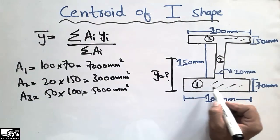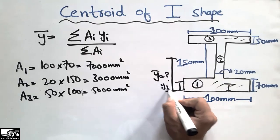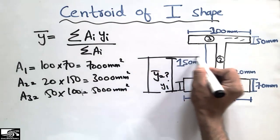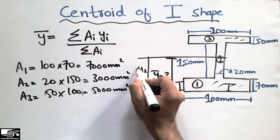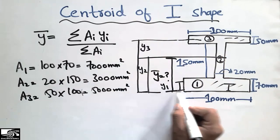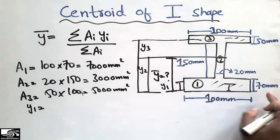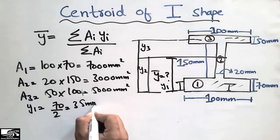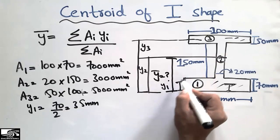Now I will find the centroid of each individual object. y1 is the centroid of the first object (bottom flange). The total depth of the first flange is 70 mm, so y1 = 70 / 2 = 35 mm, because it's a rectangle. y2 can be found by adding the full height of the first object (70 mm) to the midpoint of the web.